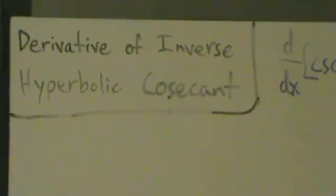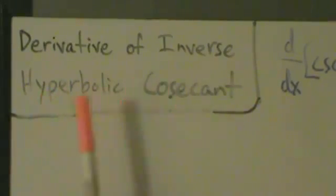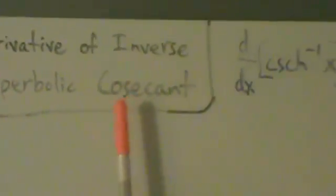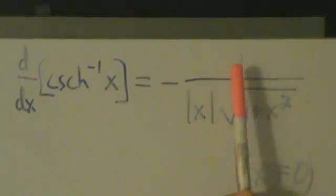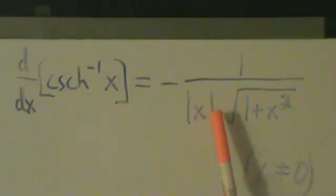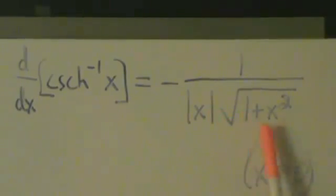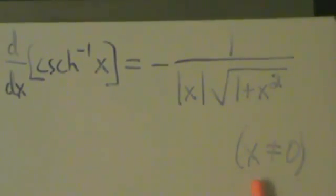Here's the last of our inverse hyperbolic trig functions. This is the derivative of inverse hyperbolic cosecant: d/dx of inverse hyperbolic cosecant of x equals negative 1 divided by the absolute value of x multiplied by the square root of 1 plus x squared. We have the restriction that x does not equal 0.